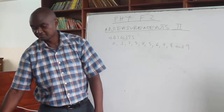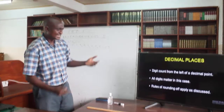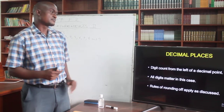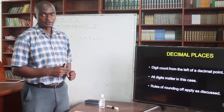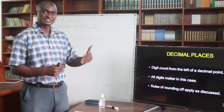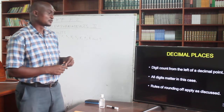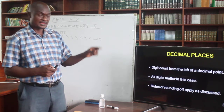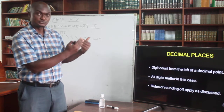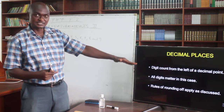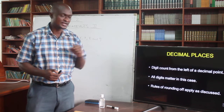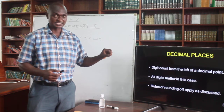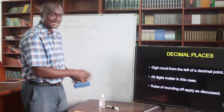Now, what do we mean by this computation? We are going to talk about decimal places. Numbers can be expressed in terms of decimal places. The digit is counted from the left of a decimal point — one decimal place, two decimal places, three decimal places, counted from the left of the decimal. All digits, if you're writing a number to two decimal places, will matter. There are rules of rounding off numbers into decimal places, and this is what I'm going to write on the board — the rules of talking about decimal places.